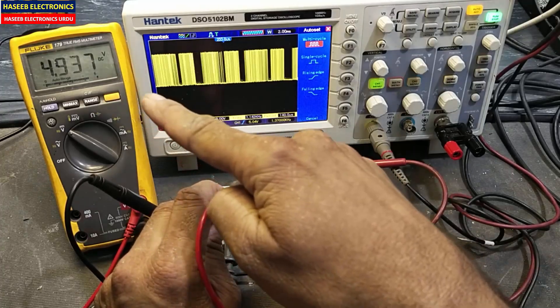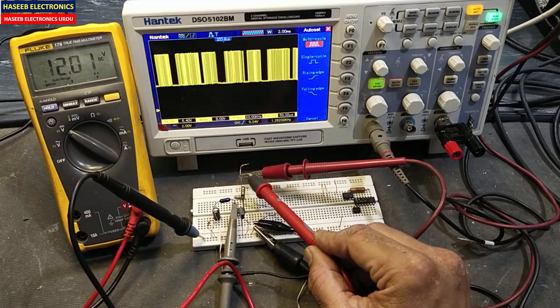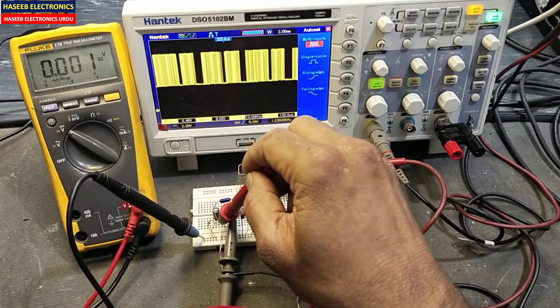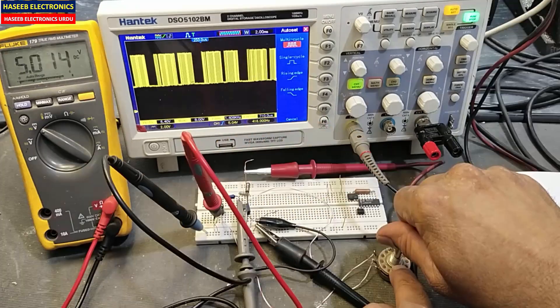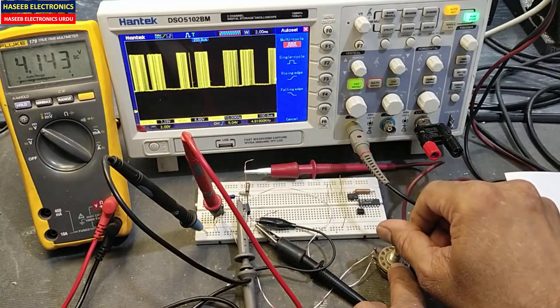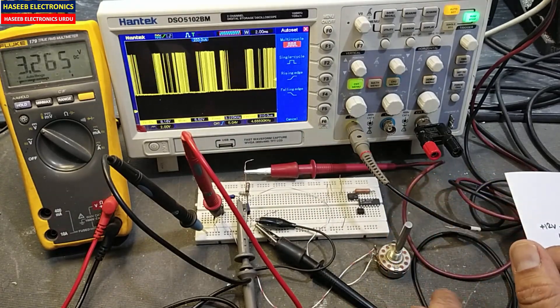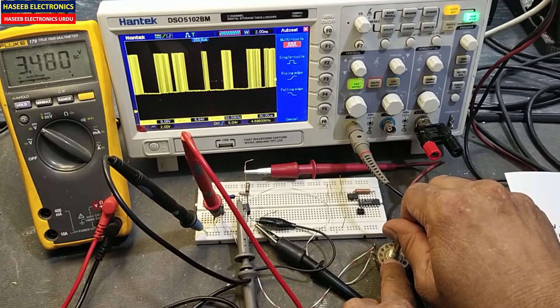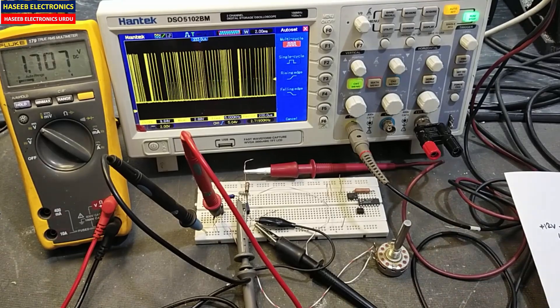Now it is giving 4.9 volts and we are applying 12 volts. Output we are taking: 4.9 volts, this time 5 volts, 4.1 volt, 3.2 volts, 1.7 volts.